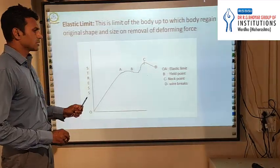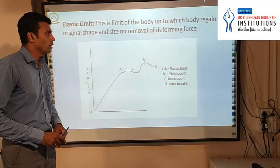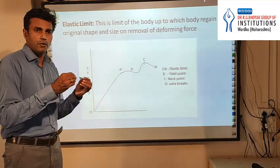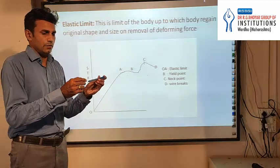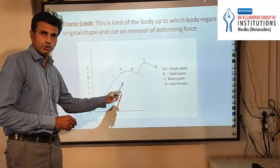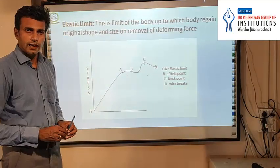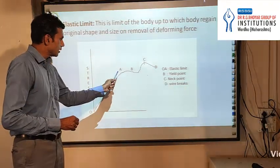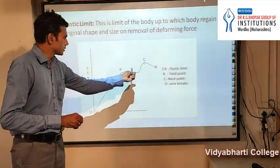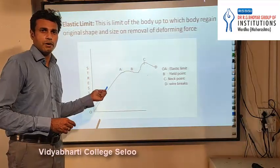Now we will discuss about the elastic limit. The elastic limit is the limit up to which a body regains its original shape and size on removal of the deforming force. When we apply a deforming force on a wire, up to a certain limit this wire will get elongated. Up to point A the wire elongates proportionally — this point A represents the elastic limit. After point A the wire elongates very rapidly and after applying some more force the wire will break. This type of experiment can be performed in a laboratory.